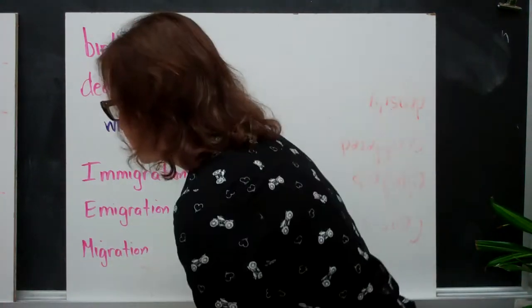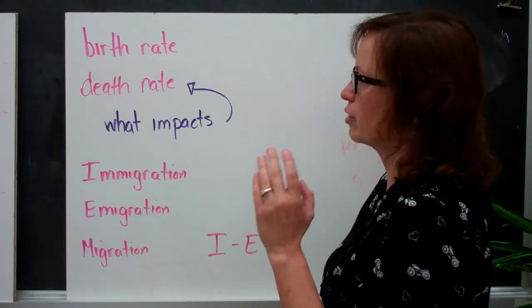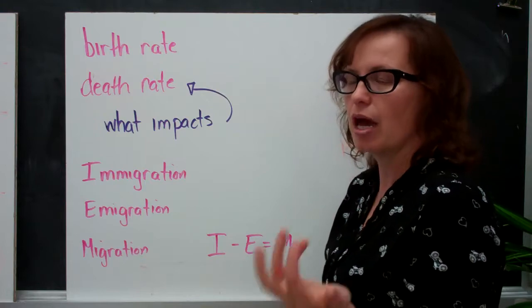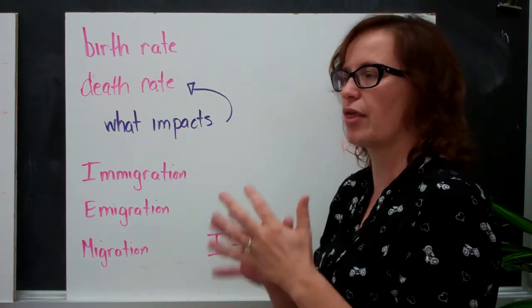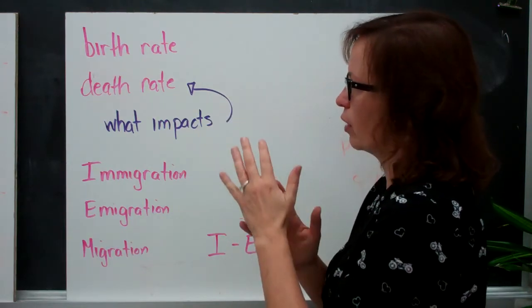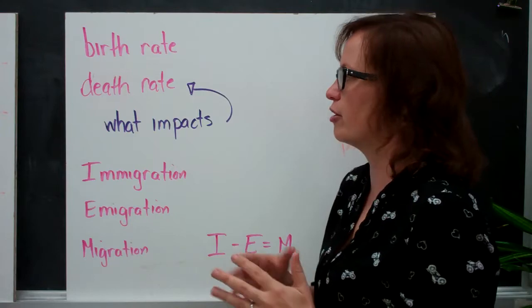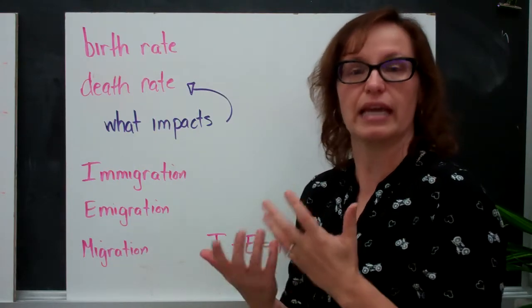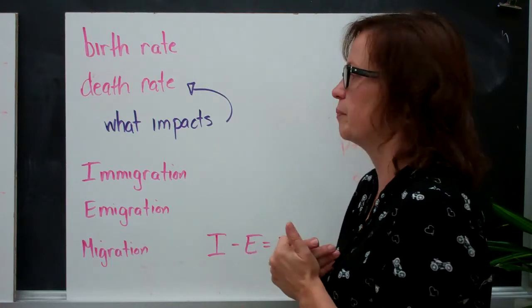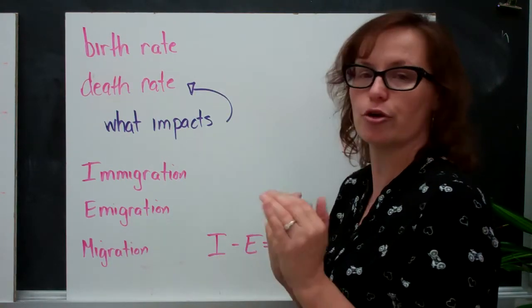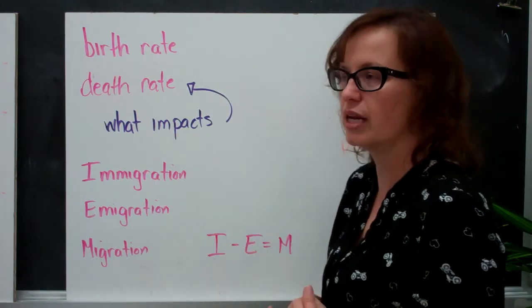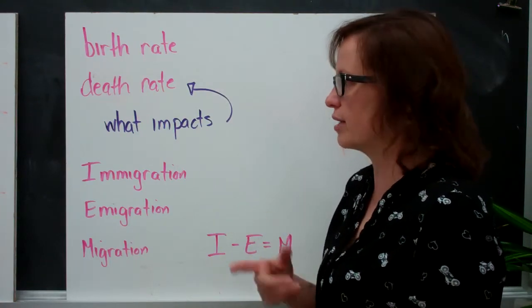Alright, so the birth rate is calculated by how many children are born by every thousand people in a country. And the death rate is how many people die per thousand people in a community. And then those are calculated. So if your birth rate is higher than your death rate, then your population is increasing. So if more people are being born than dying, obviously you have more people in your community. If your death rate is higher than your birth rate, your population is declining, because you're not replacing those people within your community, that population.